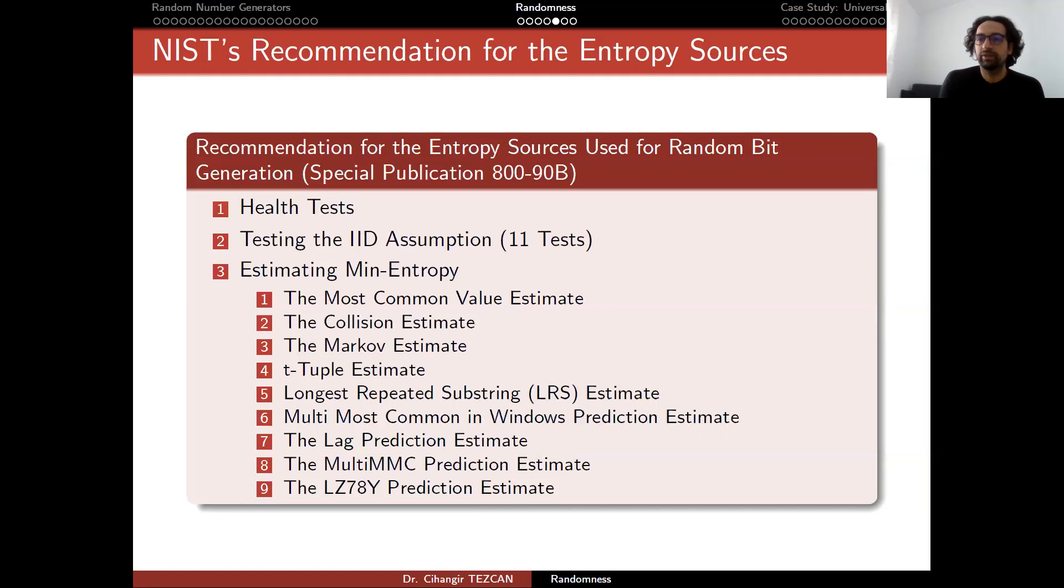In other words, you can always trick this test. And here the idea is not to find a backdoor. Here, we are assuming that you are trying to design and you are honestly trying to design a good entropy source. So you just want to check if there is something wrong with it. So this test can always be, you can design a system, a very simple one, which will pass all of these tests with high scores.